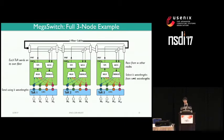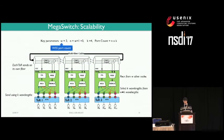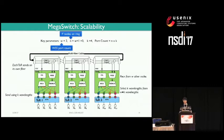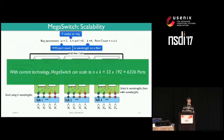This three-node example has 12 ports. The key scalability parameters of Megaswitch are as follows: the port count of WSS is W — in this case two — which determines the number of nodes on the ring N; each node can receive from W other nodes, so the maximum number of nodes is W plus one. Each fiber can carry K wavelengths, meaning each electrical switch can also send using K wavelengths, so the total port count of Megaswitch is N times K. Using existing technology, we projected the port count can go up to more than 6,000 ports.